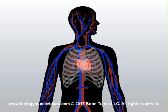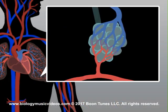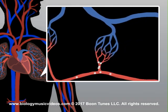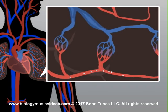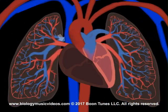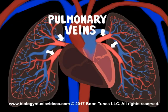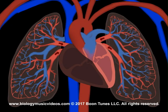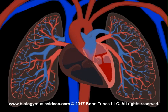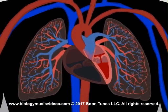Now let's see what happens to the blood that picked up the O2. The oxygenated blood now starts making its journey towards the left heart. It flows into venules that are drained by four pulmonary veins. They carry blood away from the lungs into the relaxed left atrium. The mitral valve lets it flow to the left ventricle that's relaxed below.